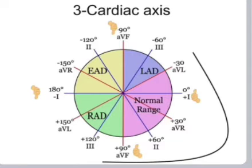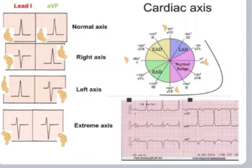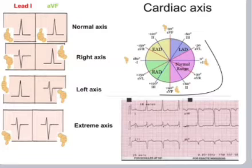Cardiac axis: AVF is at 90 degrees, AVL at minus 30 degrees, Lead I at zero degrees, and the opposite of Lead I is minus 180 degrees. In normal axis, Lead I and AVF are both upright. In right axis deviation, Lead I is down and AVF is upright. In left axis deviation, AVF is down and Lead I is upright. In extreme axis deviation, both Lead I and AVF point downward.